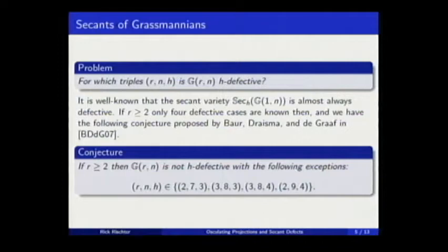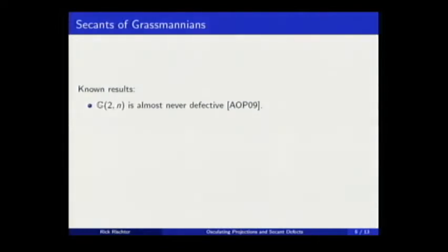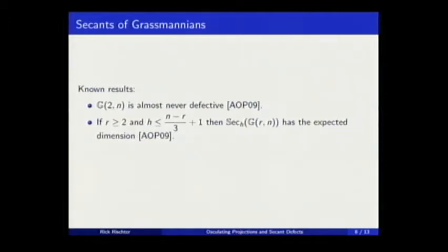We are in the beginning of the study of this. There are not a lot of work on this, but what we have is the Grassmannian of planes in Pⁿ. It's a work done by Abo, Ottaviani, and Peterson. They almost completed this case. And in the same paper, they give a bound, that bounds h at most (n - R)/3 + 1, for which sec_h of the Grassmannian G_R,n has the expected dimension.